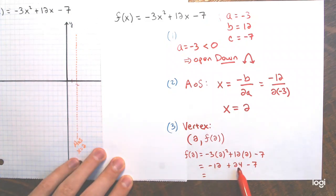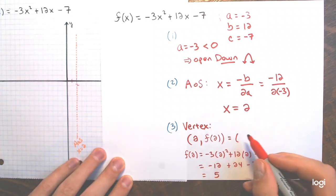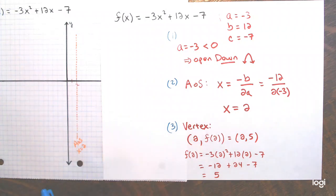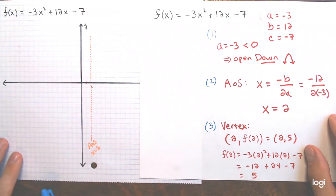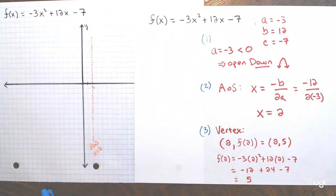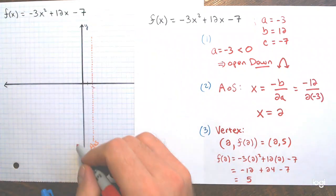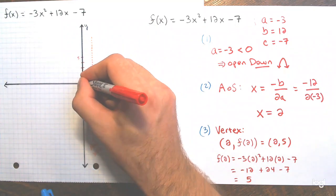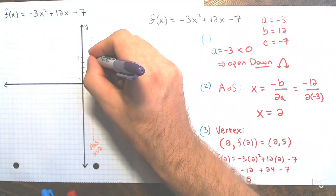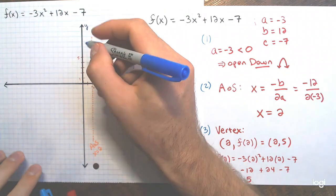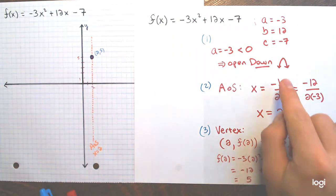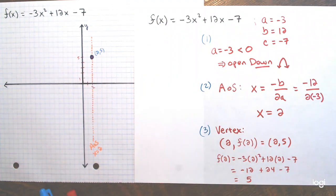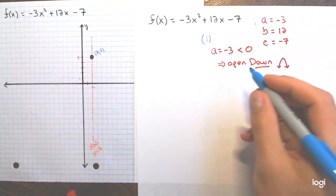Finding the vertex: x-coordinate is 2, and y-coordinate is f(2). That's negative 3 times 4 plus 12 times 2 minus 7, which equals negative 12 plus 24 minus 7 equals positive 5. So the vertex is at (2, 5). I plot that point. Since it opens down, this is the highest point on the graph.